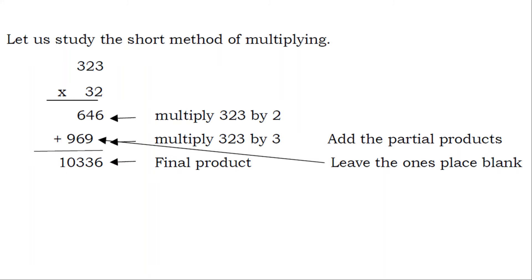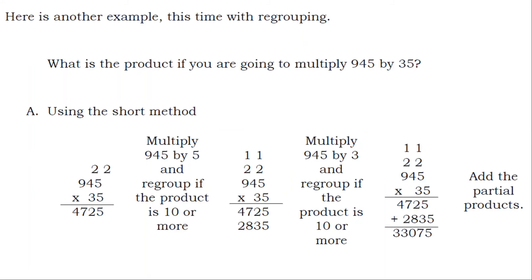Let us study the short method of multiplying. Multiply 323 by 2 equals 646. Multiply 323 by 3 equals 969 — leave the ones place blank. Add the partial products: 646 plus 969 equals 10,336. 10,336 is the final product. Here is another example, this time with regrouping.